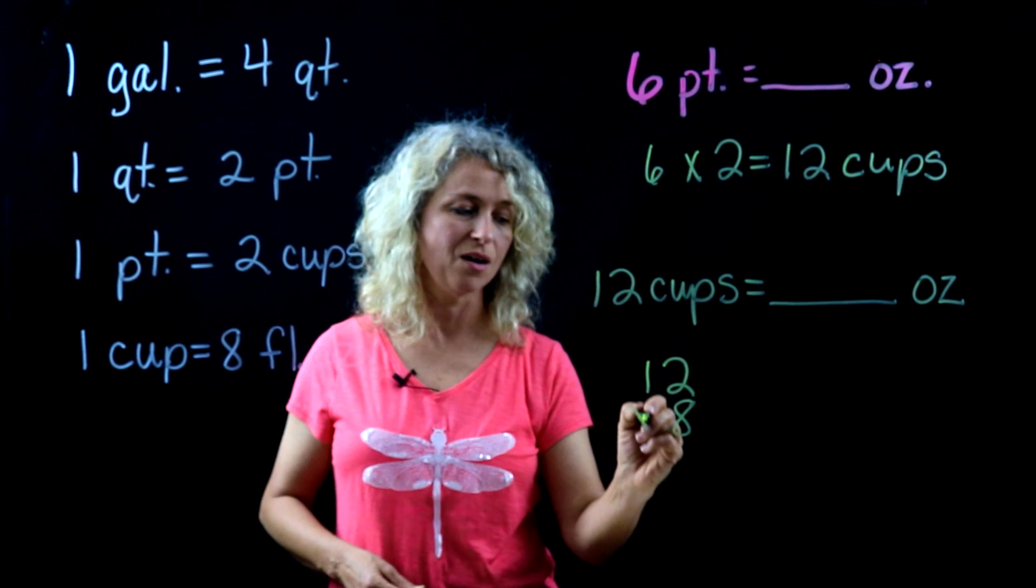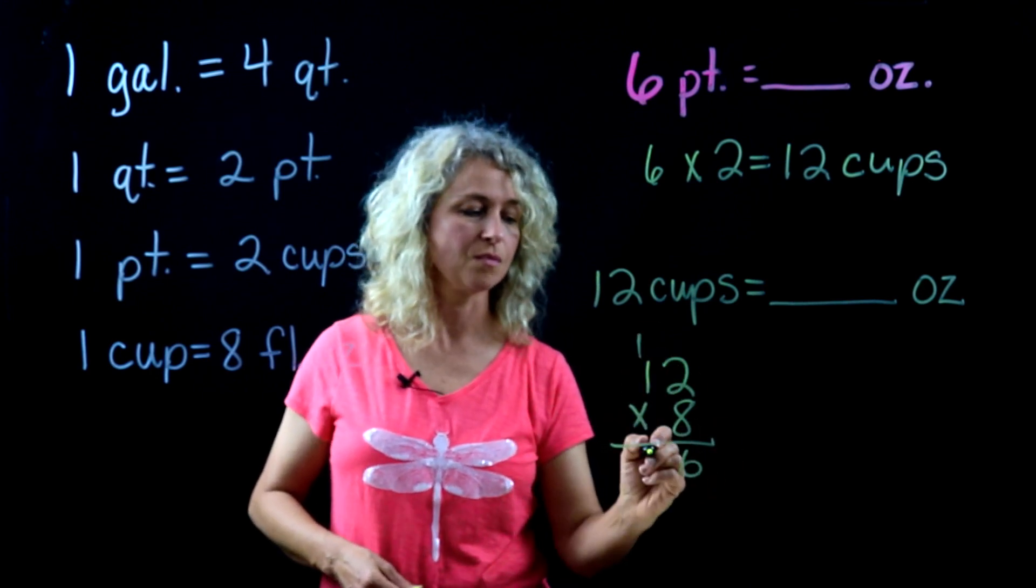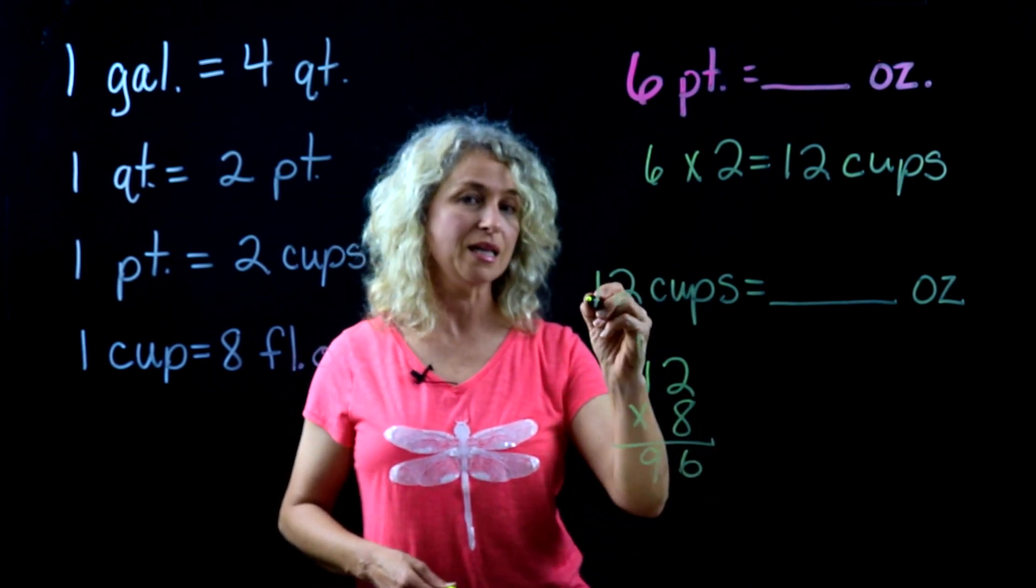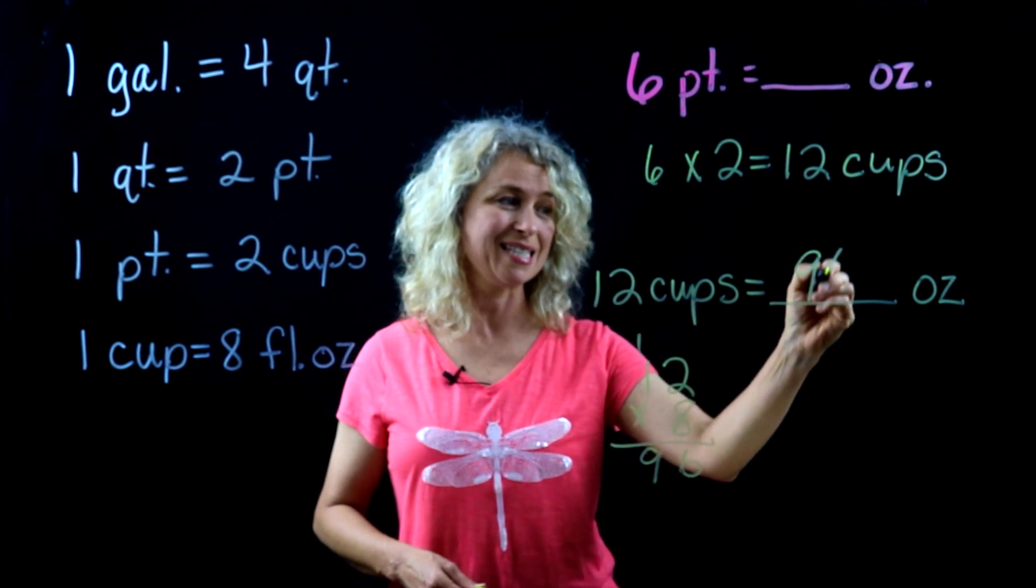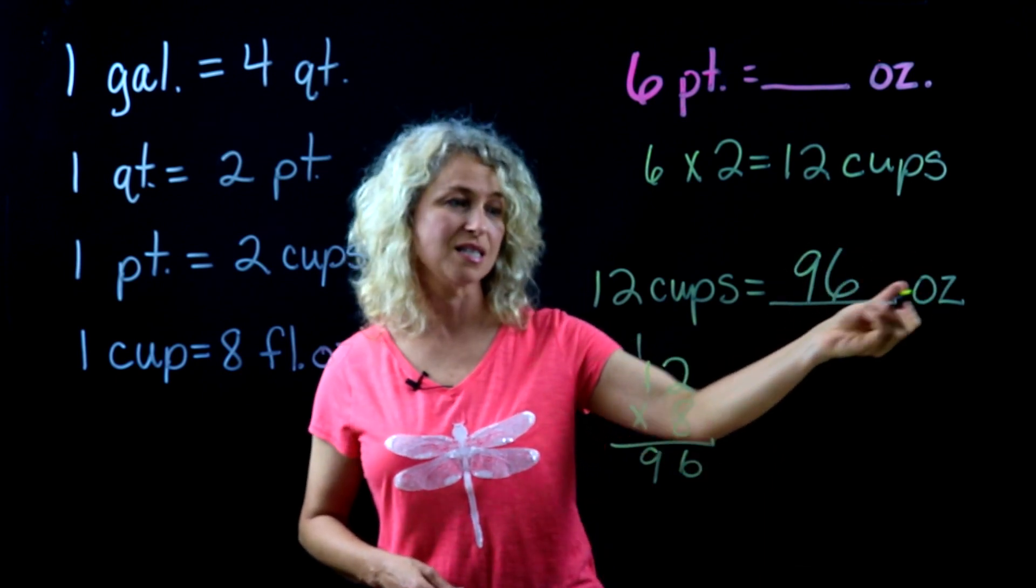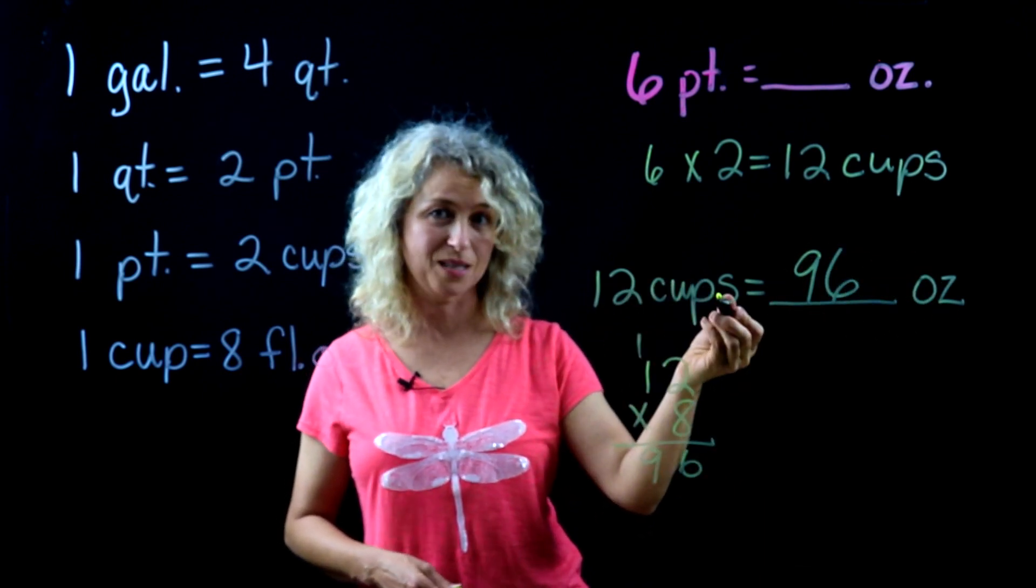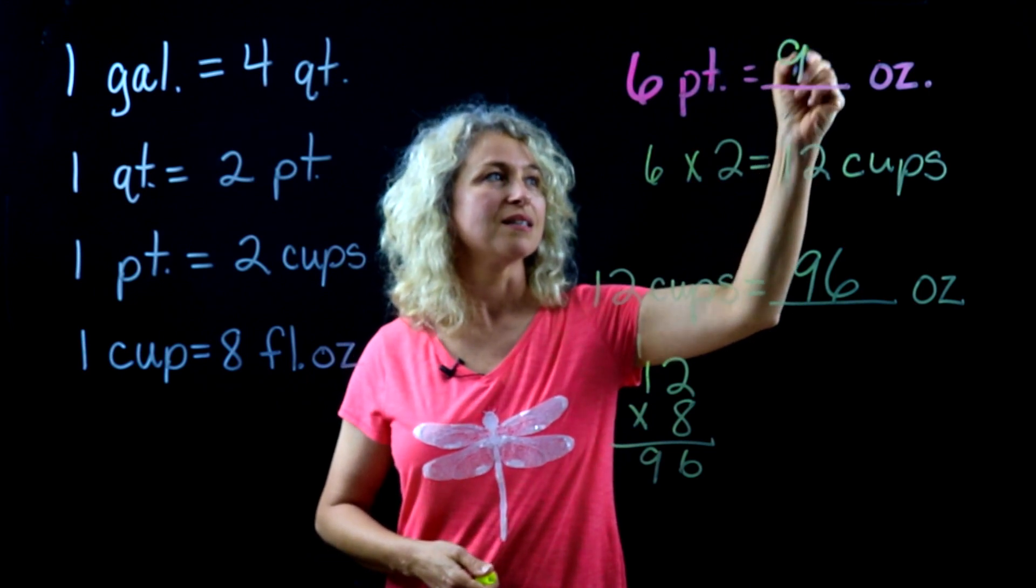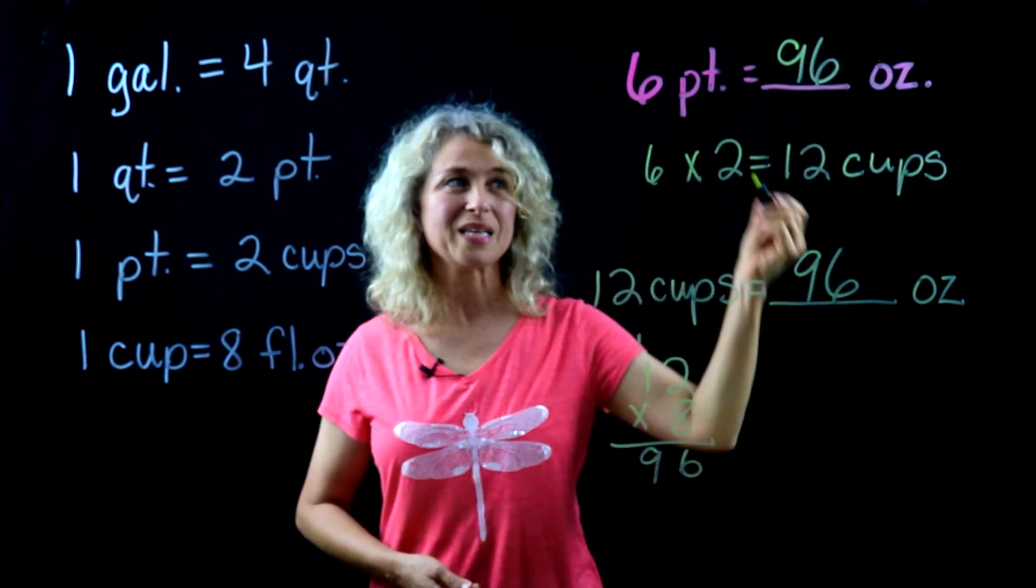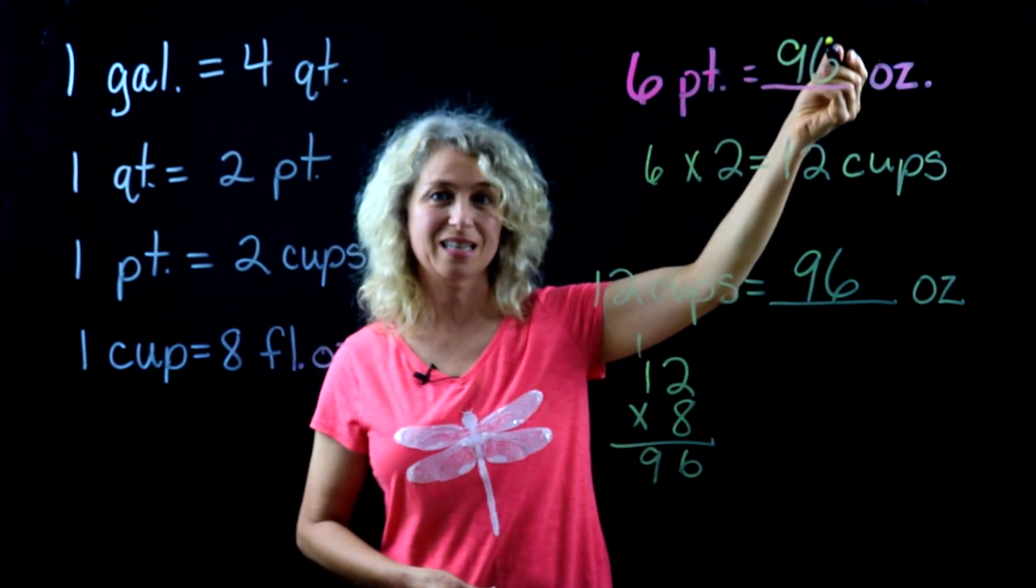Now there are ninety-six fluid ounces in twelve cups, so six pints equals ninety-six fluid ounces.